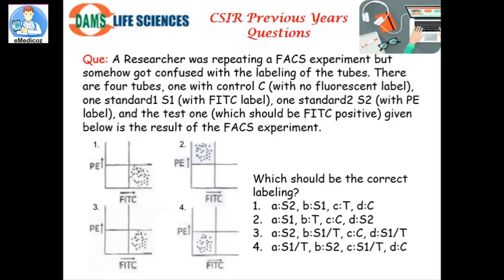Let's try another question. A researcher was repeating a FACS experiment but got confused with the labelling of the tubes. There were four tubes: a control (C) with no fluorescent label, S1 with FITC label, S2 with PE label, and a test tube which should be FITC positive.